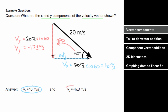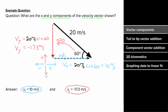Using sine and cosine gives you the magnitude of the components, but you have to add the negative signs accordingly. If the vector points right, the horizontal component is positive; if it points left, it's negative. If the vector points up, the vertical component is positive; and if it points down, the vertical component is negative.